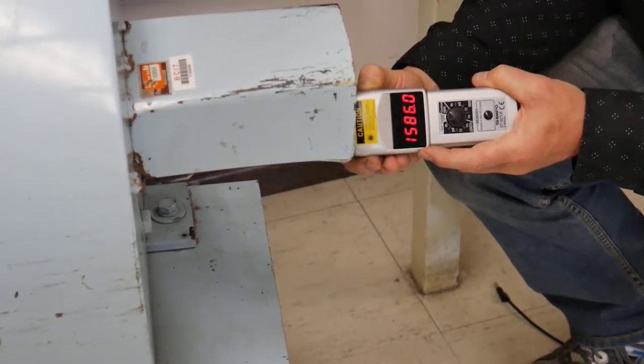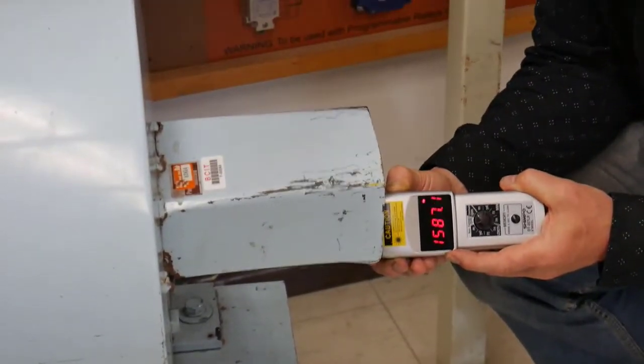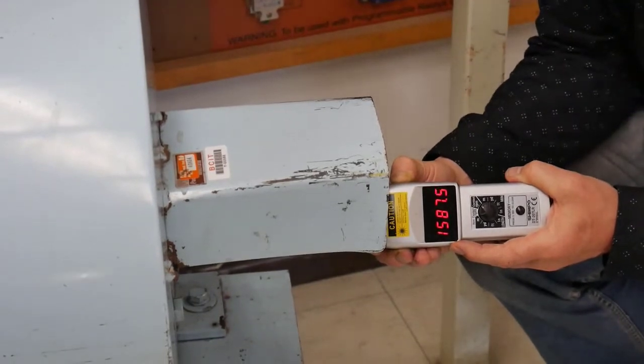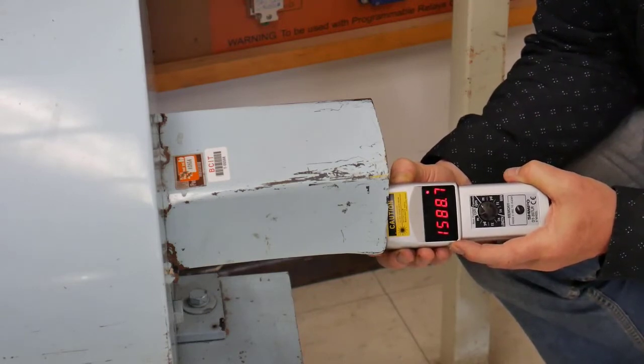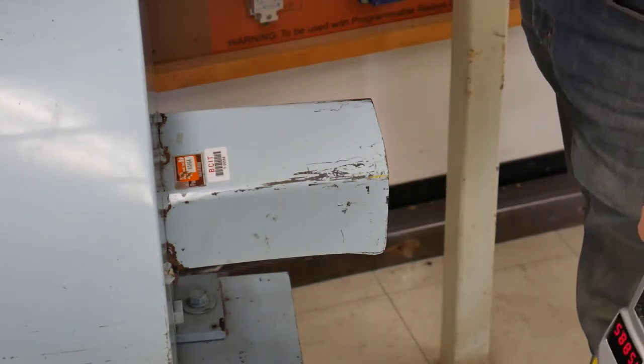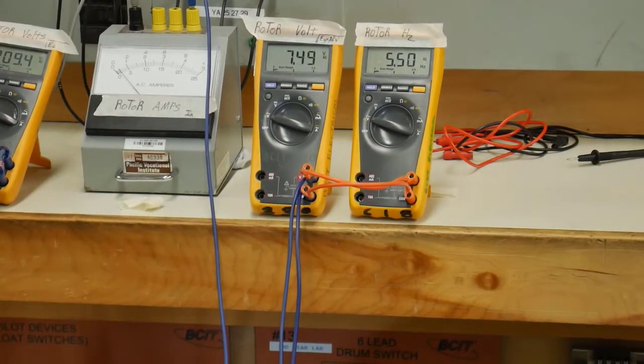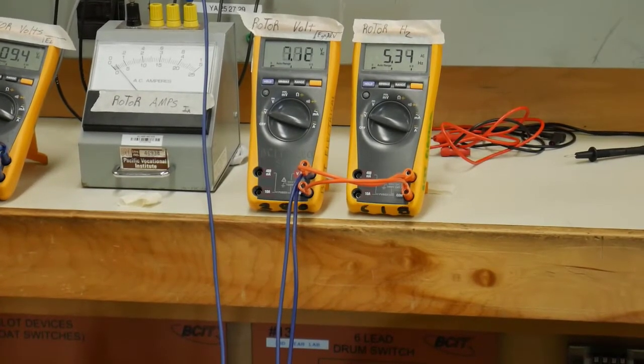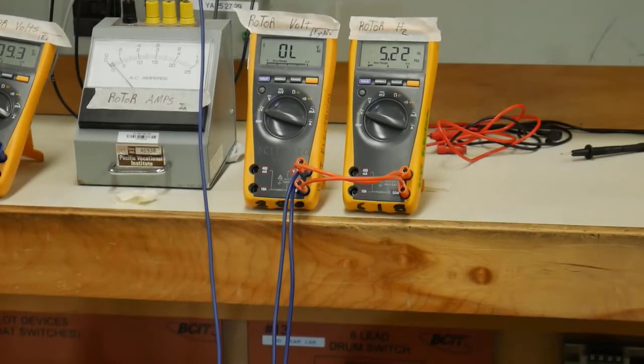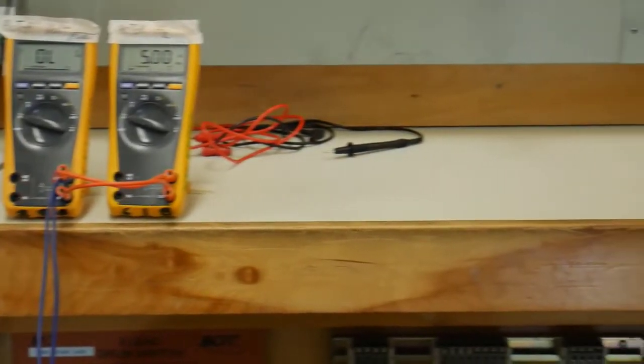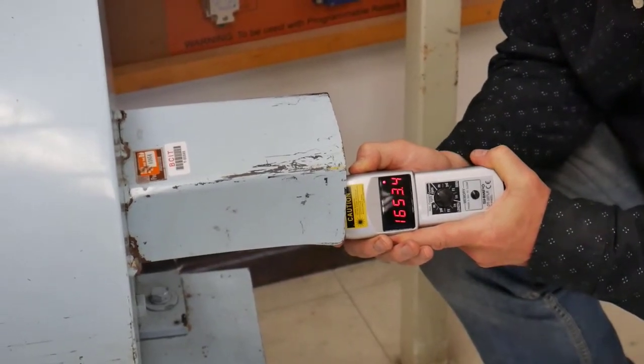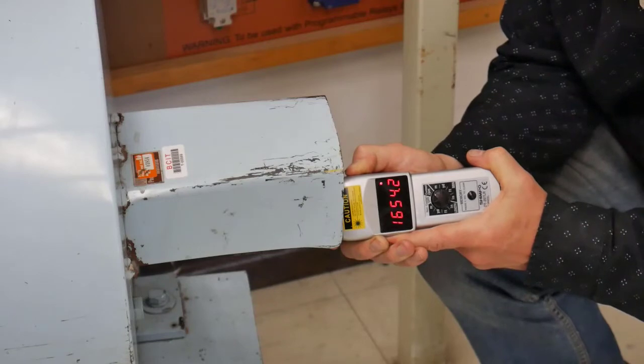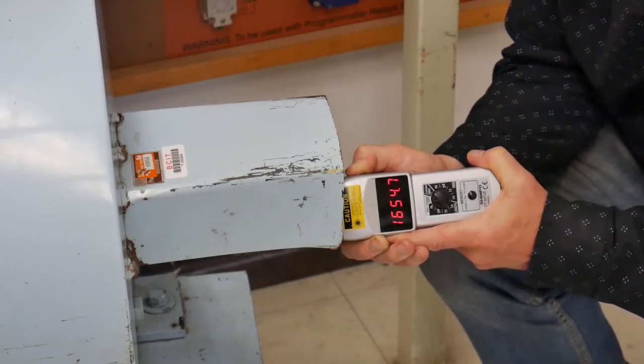We're going to the second stage of our lab where we'll take out our first set of resistors. Our frequency and volts are going to drop. We dropped down to six volts and five hertz. Our RPM has increased up to about 1655 RPM, so it has increased a little bit.